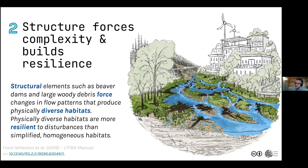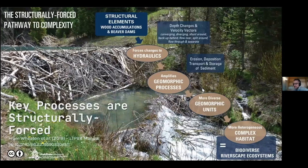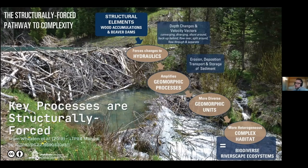The second principle is: structure forces complexity and builds resilience. In these illustrations, the emphasis is on structure like woody debris jams or beaver dams in a wet meadow system — or it could be rhizomatous root mats. That structure makes things more complex: it changes the hydraulics, making things deeper or shallower, faster or slower. Those changes from something uniform and monotonous to something diverse amplify and modulate geomorphic processes — erosion, deposition, transport, and storage of sediment — leaving behind more complex geomorphic units, which are much more interesting habitat.